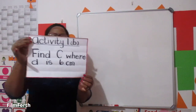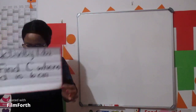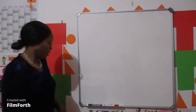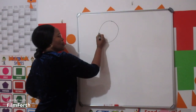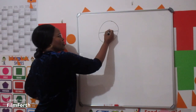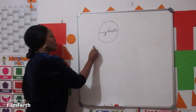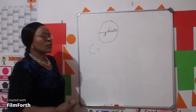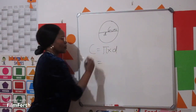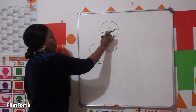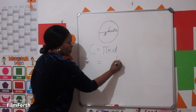Activity 1B: find C where d is 6 centimeters. Let's calculate. Draw a circle — diameter, small d, is 6 centimeters. Calculate C. The equation remains pi times d. Our d is 6 centimeters.